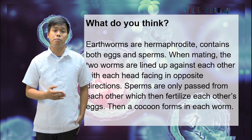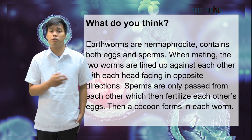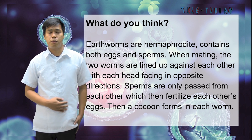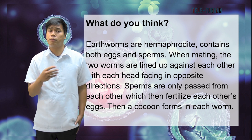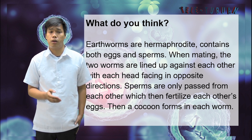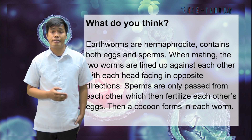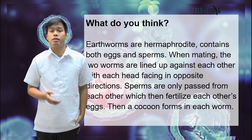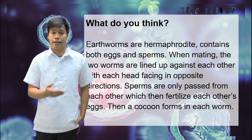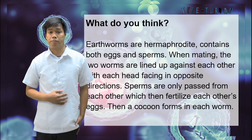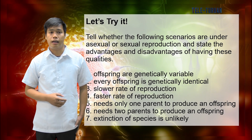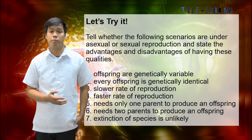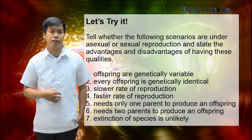Those are the different ways on how animals reproduce. I hope that you learned something today, but before we end this session, feel free to pause this video and answer the following questions. First, what do you think? The earthworm, a hermaphrodite, contains both egg and sperm. When mating, the two worms are lined up against each other with each head facing in the opposite direction. Sperm are passed from each to the other, which then fertilize each other's eggs, and a cocoon forms in each worm.